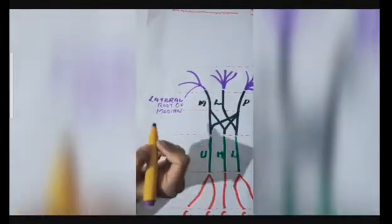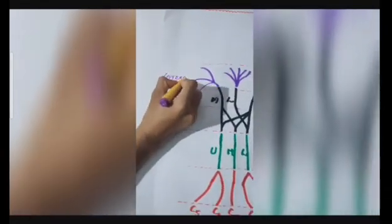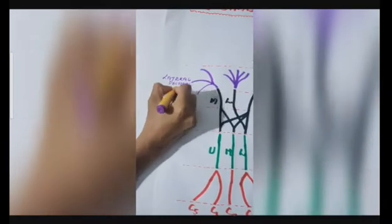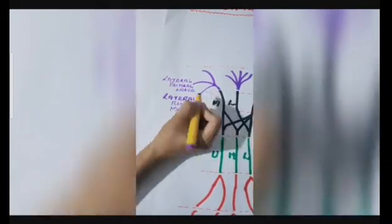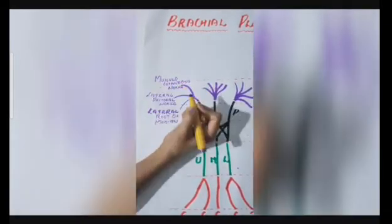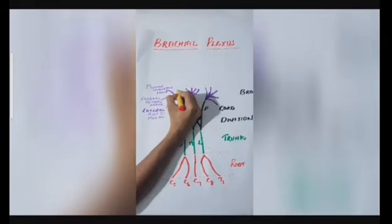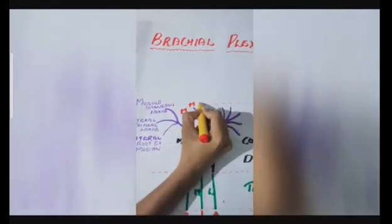The lateral cord splits into 3 branches. An easy way to remember this by using a mnemonic, love my life. In this, the first L stands for the lateral root of median. M stands for the musculocutaneous nerve. Finally, the L stands for the lateral pectoral nerve.